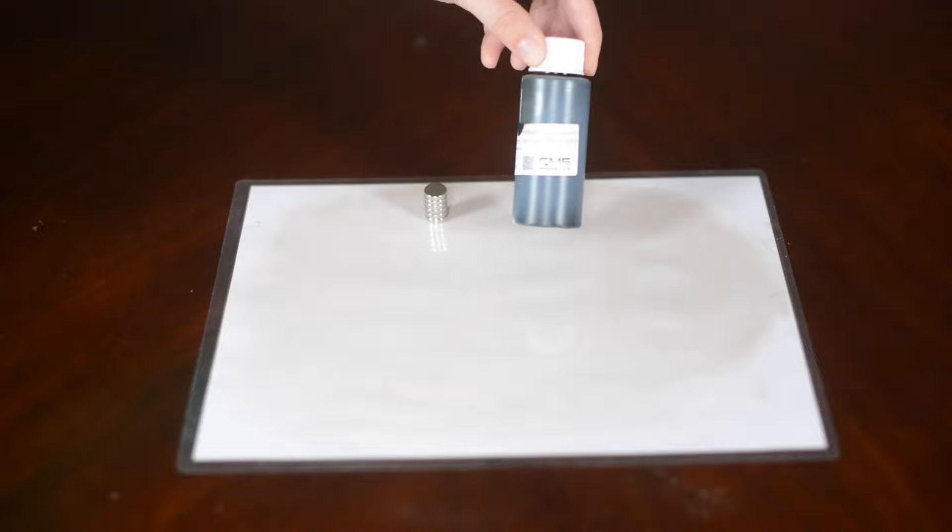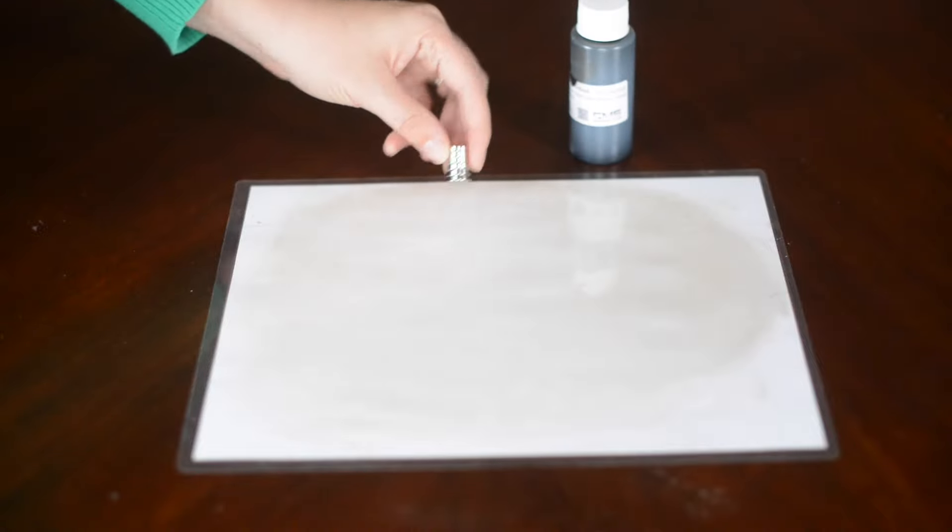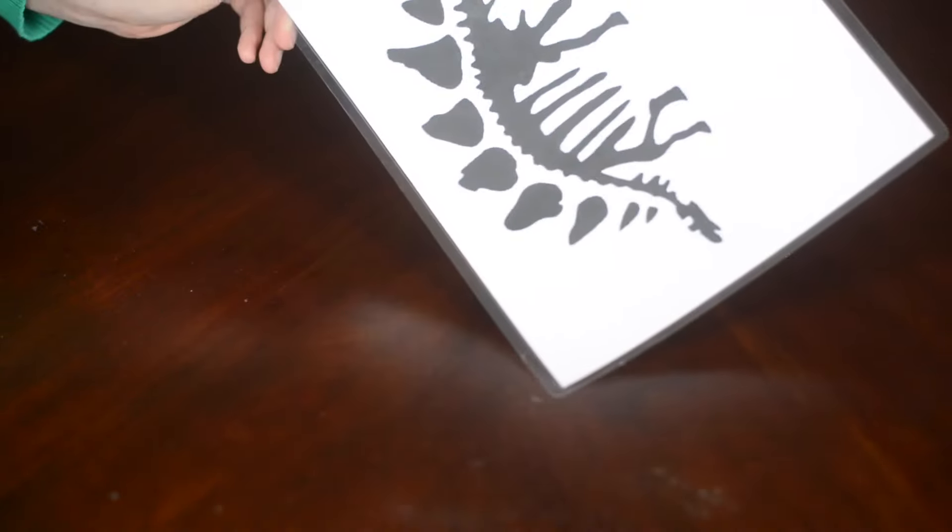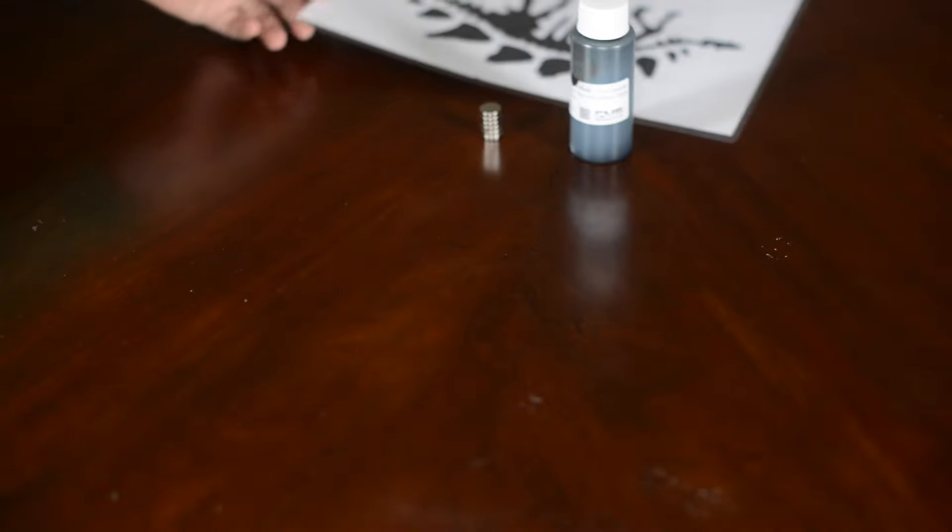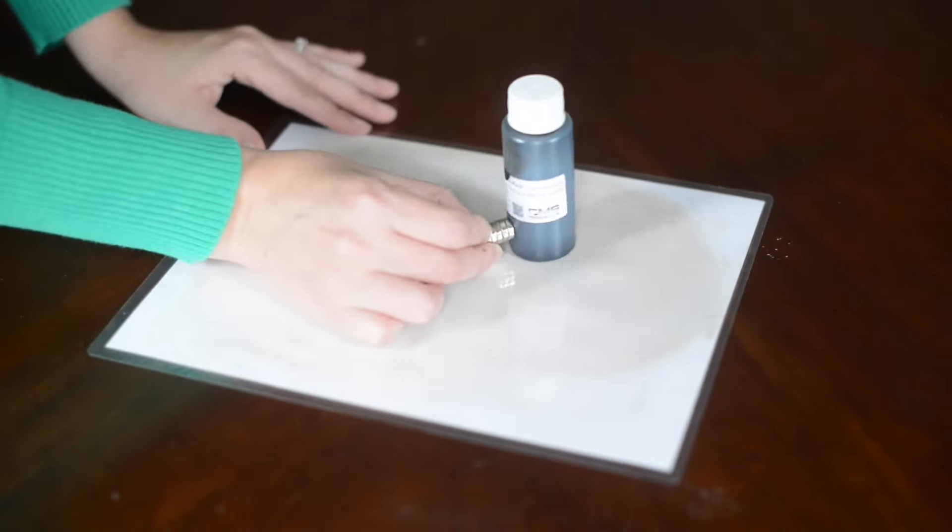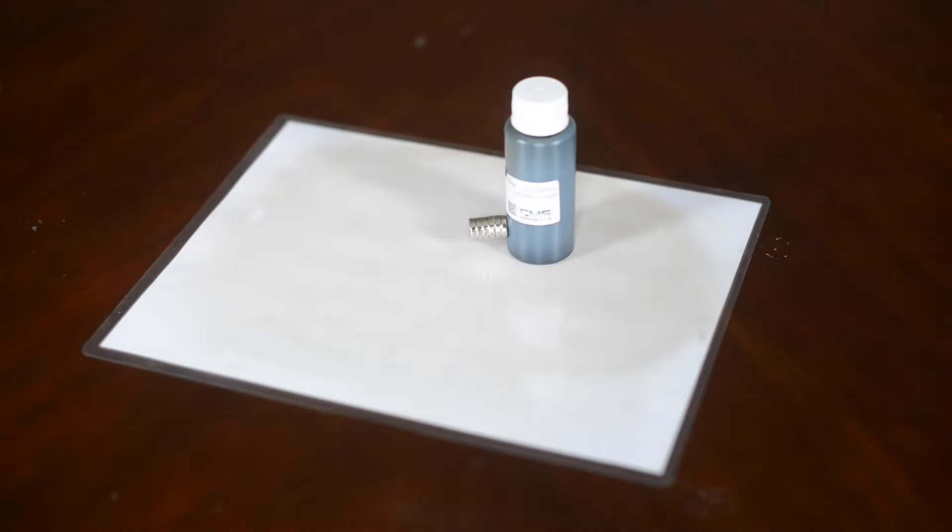What you'll need for this is ferrofluid. I'll include a link to where to get that below. Magnets and a sheet of laminated paper. We used an old activity sheet that we had in the schoolroom. All you do is pour a little bit of your ferrofluid on the paper and then move the magnet underneath, and because ferrofluid is magnetic, it makes the ink look like it's coming alive.